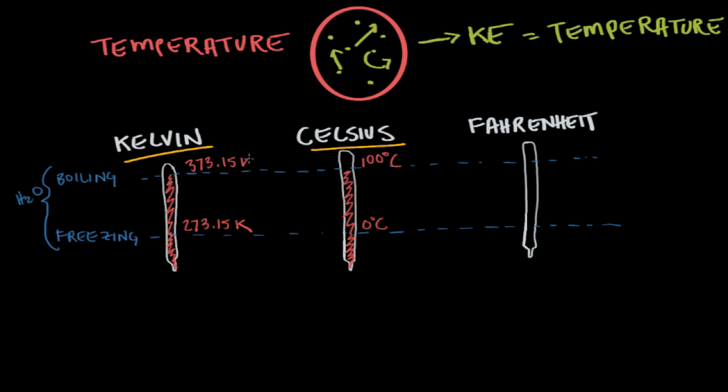The Celsius and Kelvin scales differ in the zero points they use. But between water's freezing point and boiling point, we have a span of 100 temperature units for both scales. So although they differ in their zero points, they use the same size unit to measure temperature, which means converting between them only requires an adjustment for the two different zero points.